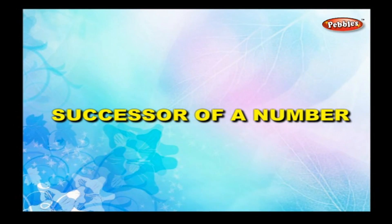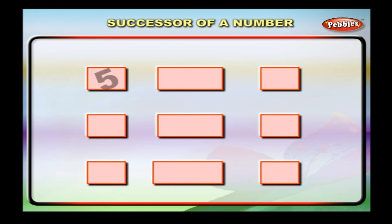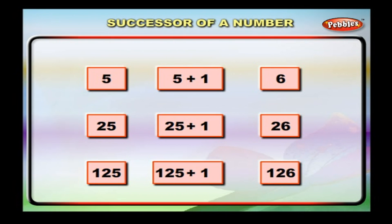Successor of a number. The number that comes just after a particular number is called its successor. In numerical order, the successor of a number is one more than the number. The successor of five is five plus one, that is six. The successor of twenty-five is twenty-six. The successor of one hundred and twenty-five is one hundred and twenty-six, and so on.